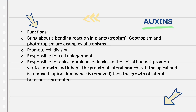Auxins in the apical bud will promote vertical growth and inhibit the growth of lateral branches. If the apical bud is removed, apical dominance is removed as well, and this results in the growth of lateral branches being promoted.